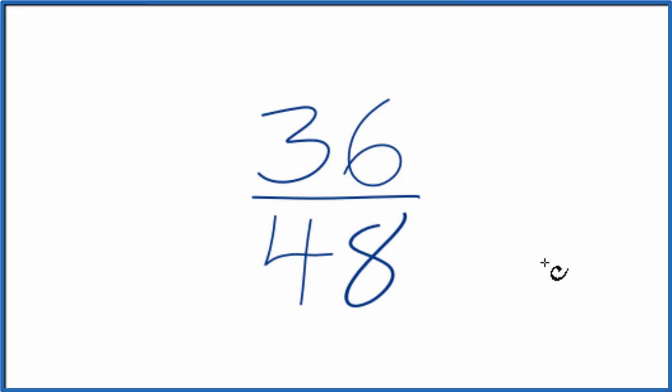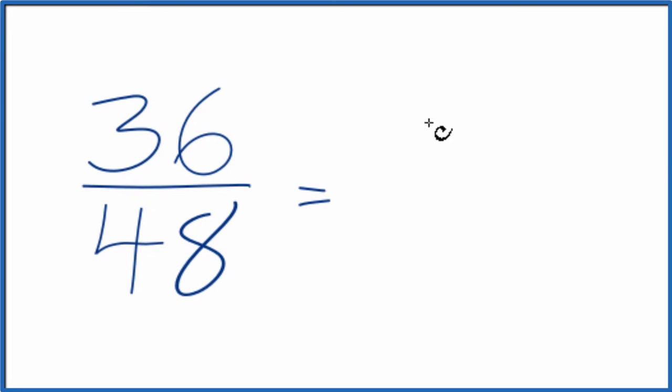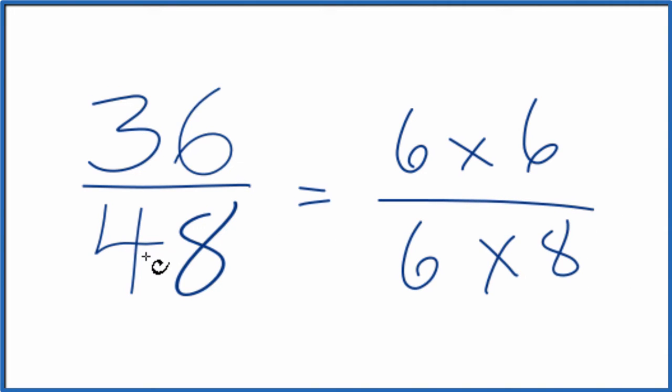To do that, we need to find a multiple that goes into 36 and 48. If you know your multiplication tables, 6 goes into both 36 and 48. So we could write it like this: 6 times 6 gives us 36, and 6 times 8 gives us 48.